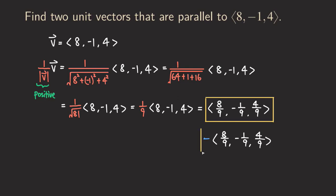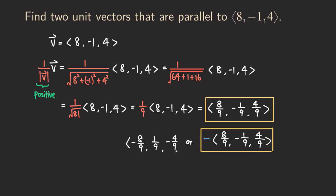If you want, you can distribute the negative one to each component. That gives us negative eight over nine, then negative times negative one over nine gives positive one over nine, and then negative four over nine. So those two forms are actually the same answer — they're equal. Those are the two answers: both are unit vectors, one pointing in the same direction as V, and the other pointing in the opposite direction.